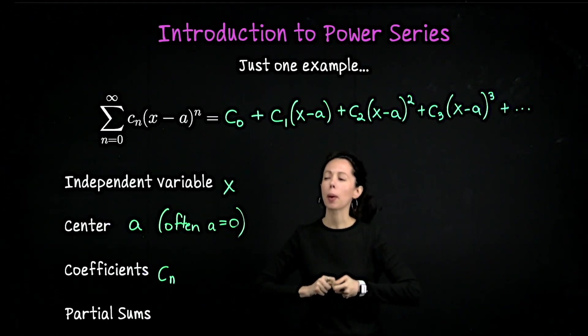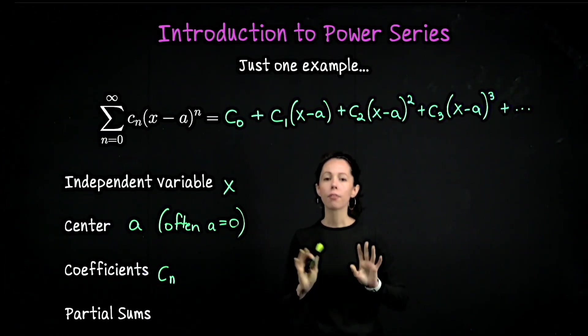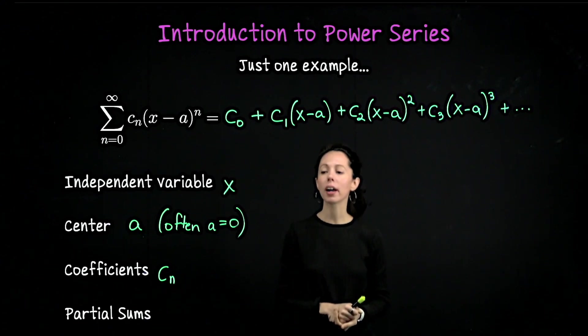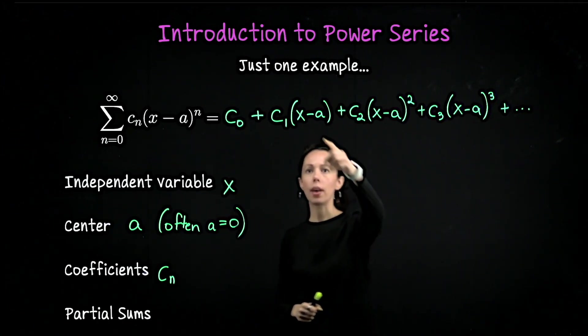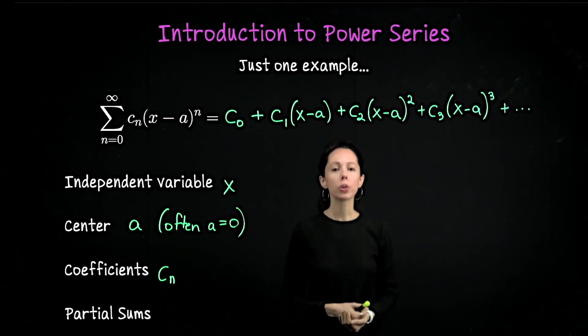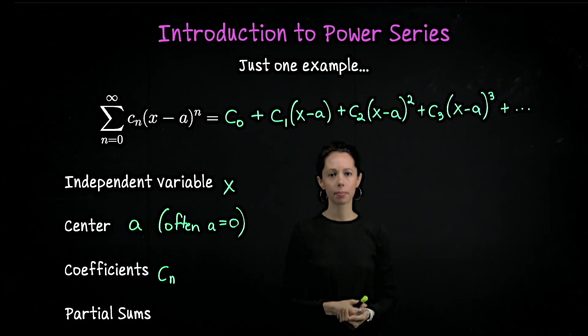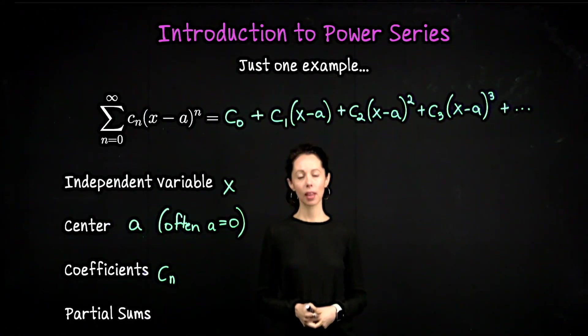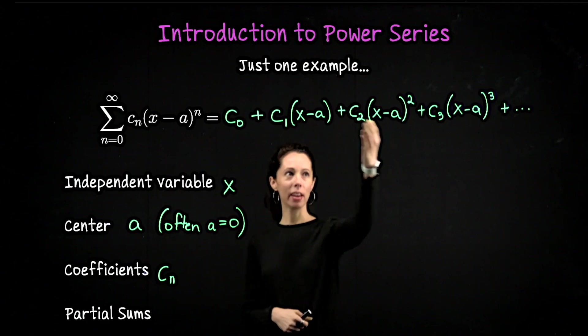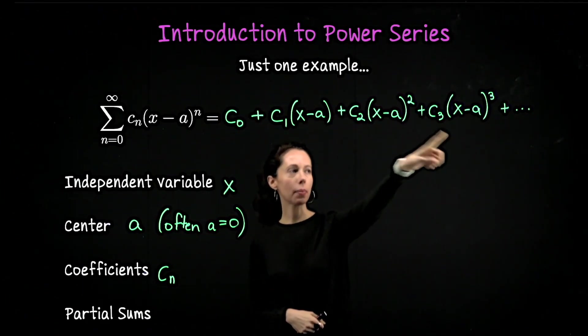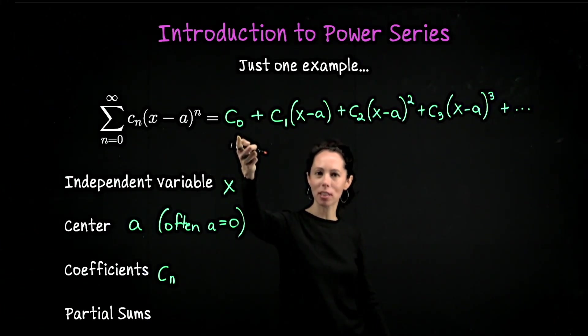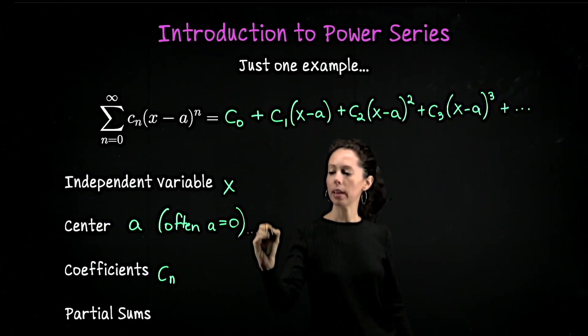We will say more in future videos about why we call it the center. For now, what I would like you to do is pause for a minute, have a moment to think about this notation as I've written it down so far. Test what happens if I plug in the value a for the variable x. So if everywhere I have x, I substitute in a, what would you conclude about the power series? What you probably realized is that if I plug in a everywhere I have the independent variable x, all of these (x - a) terms become 0. So our series would add up to just the leading coefficient c_0. So if x equals a, the series adds up to that coefficient c_0.